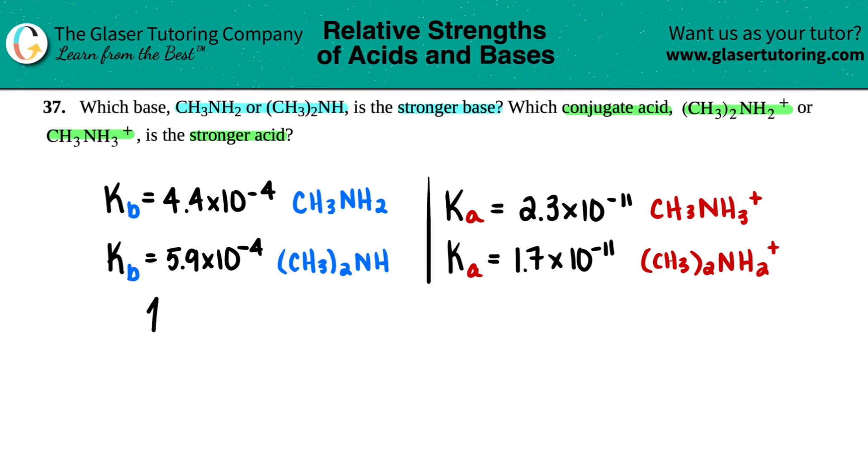The higher the KB, so the higher the KB value, that just means that you are increasing in basicity. So you're going to be a stronger base. So all we got to do is just figure out which one is the higher KB value.